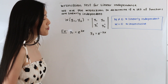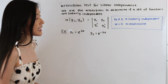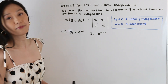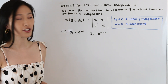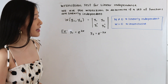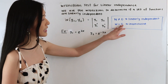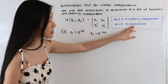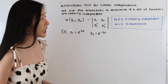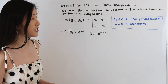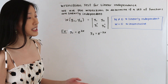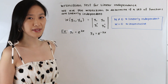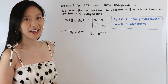When our Wronskian is not equal to zero, that means we have two linearly independent functions. If the Wronskian is equal to zero, this means that our test is inconclusive and we cannot conclude that our functions are linearly independent or linearly dependent. Now let's go ahead and take a look at some examples and apply this.